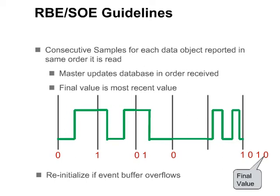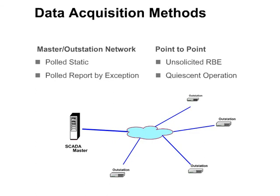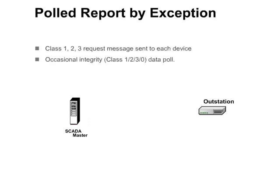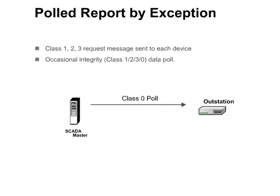DNP-3 supports multiple methods of retrieving data. Master-outstation networks typically use pulled static or pulled report by exception. In point-to-point networks, unsolicited report by exception and quiescent operation may be used. With the pulled static data acquisition method, a class 0 or specific data request message is sent to each device and the device returns the requested data. With pulled report by exception, a class 1, 2, and/or 3 pull request is sent to each device and the device responds only with the events for the requested class. An occasional integrity — class 1, 2, 3, 0 — pull is used to ensure that the database remains in sync.